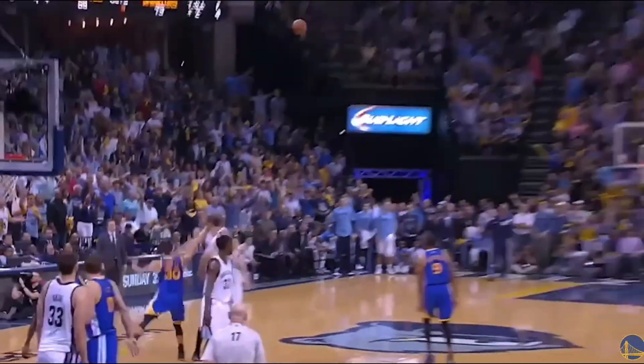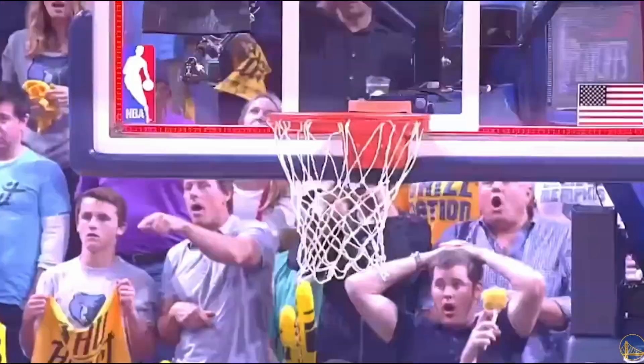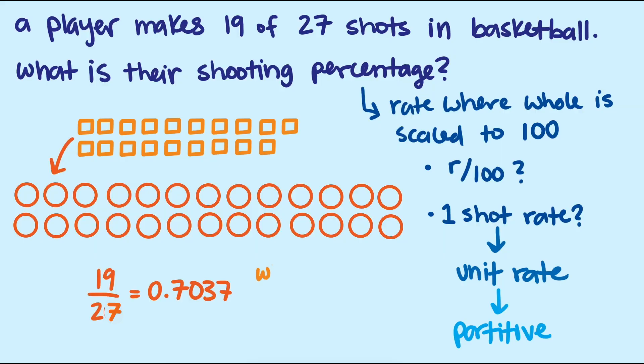Now that can be difficult to make sense of in contexts with discrete values, since each shot is a make or a miss, not .7037ths of a make. But this is where percentages have power. Scaling up from a unit rate to a rate out of 100 to get 70.37, so we expect the player to make about 70 shots out of 100.